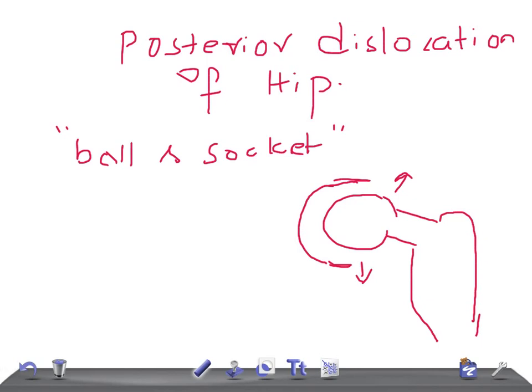In posterior dislocation of the hip, the head of the femur is pushed out of the acetabulum posteriorly — the head of the femur moves backwards. In 50% of cases, this is associated with a chip fracture of the posterior lip of the acetabulum. As the head moves out, it pushes part of the acetabulum and causes a fracture, known as a chip fracture.